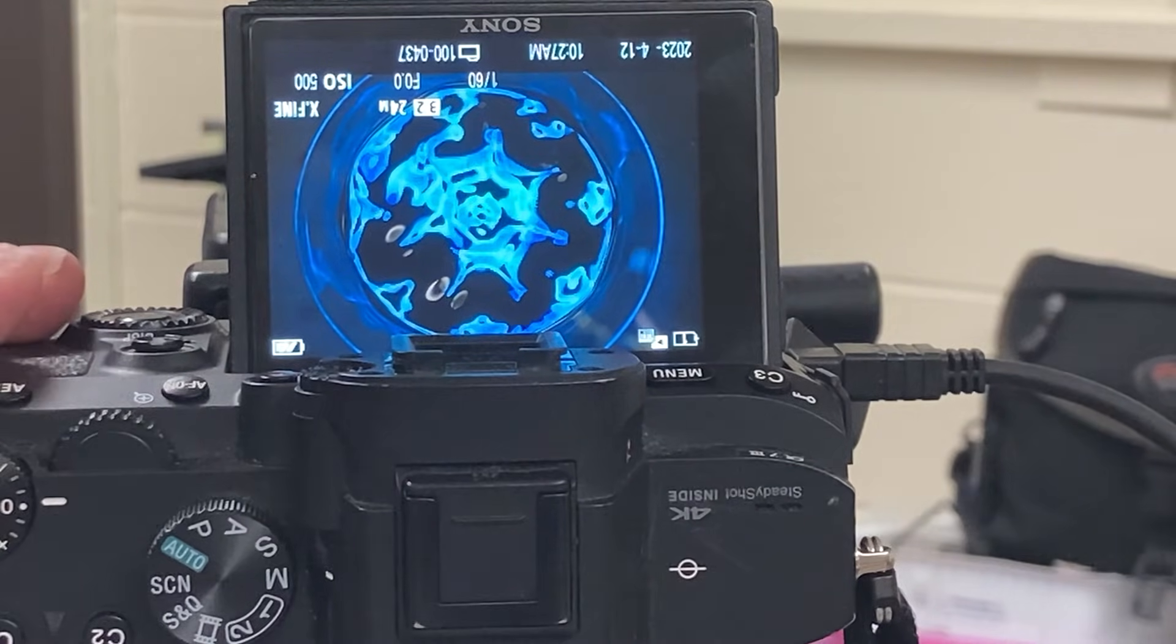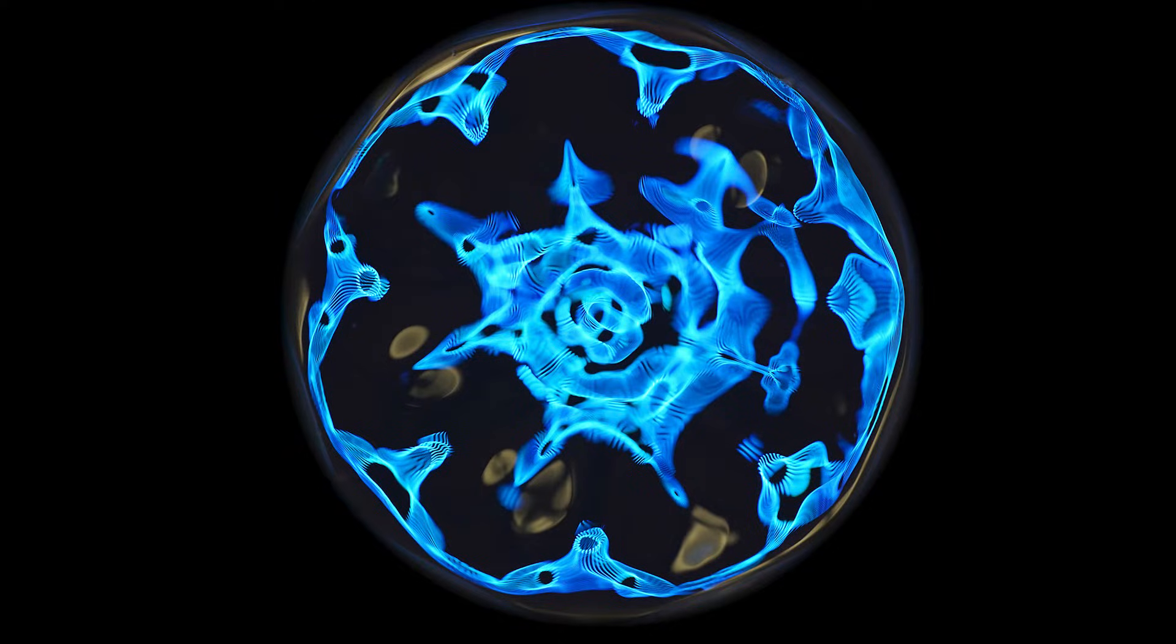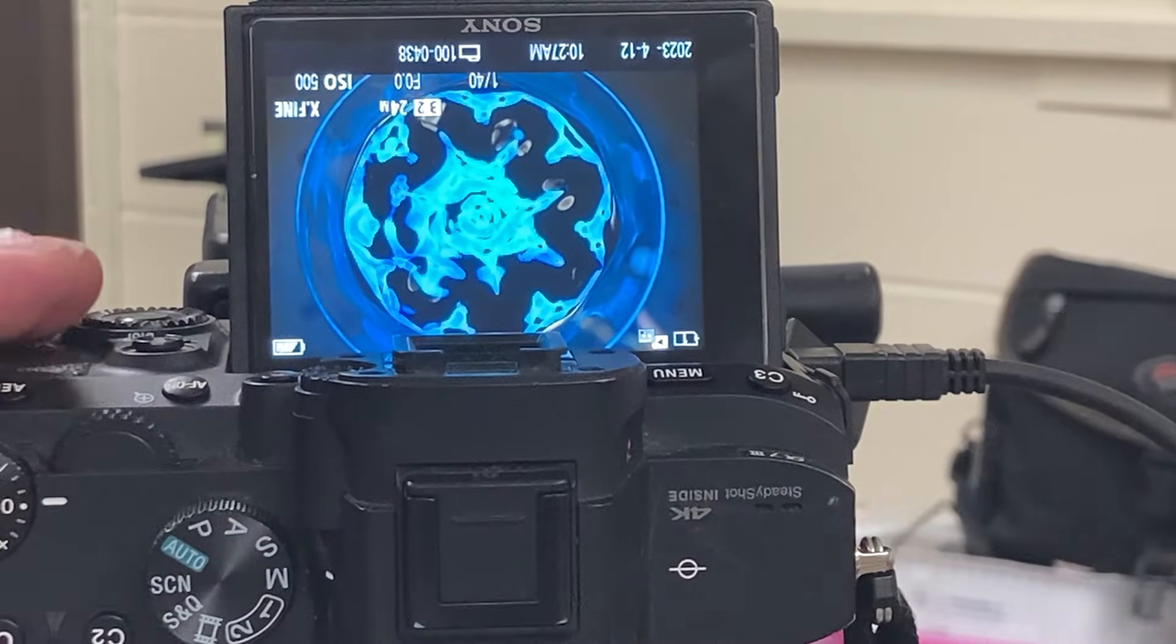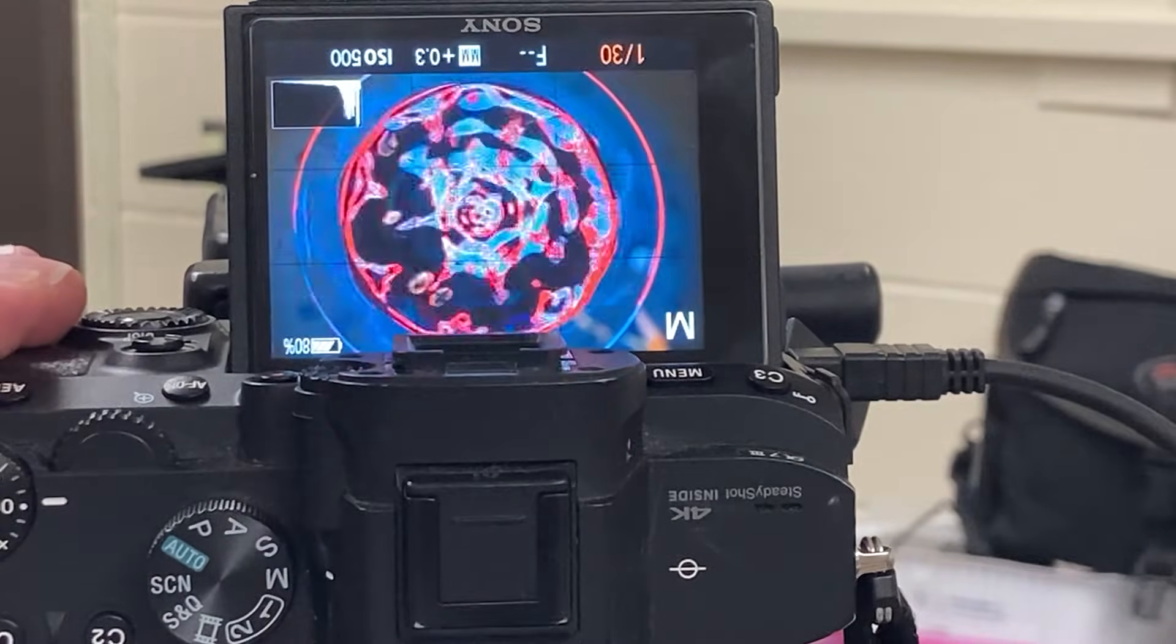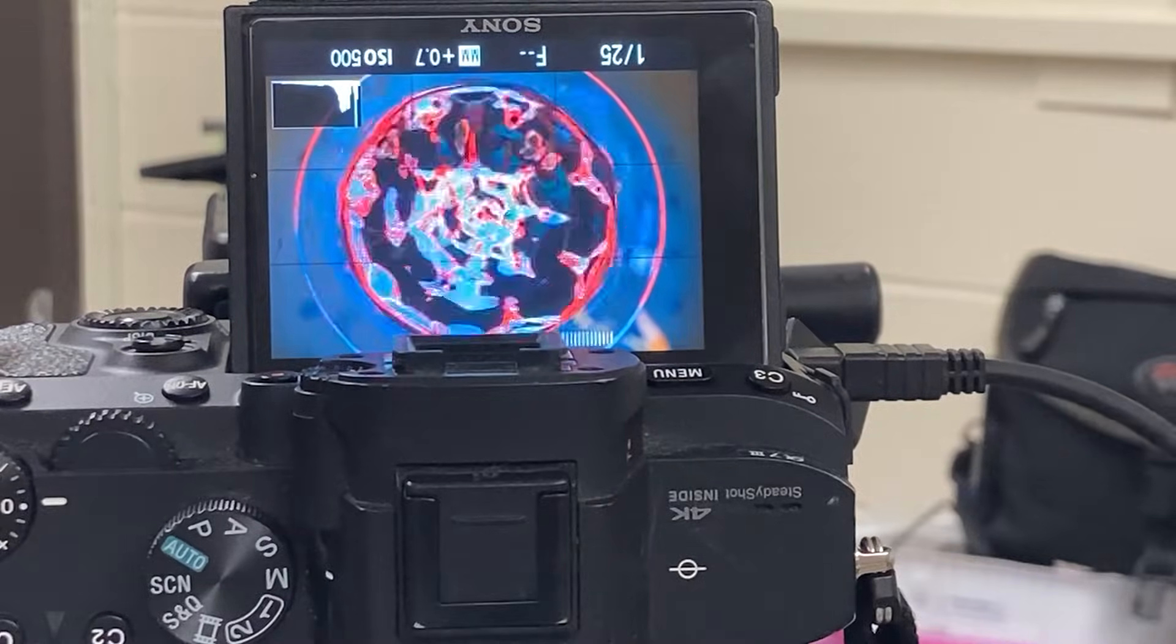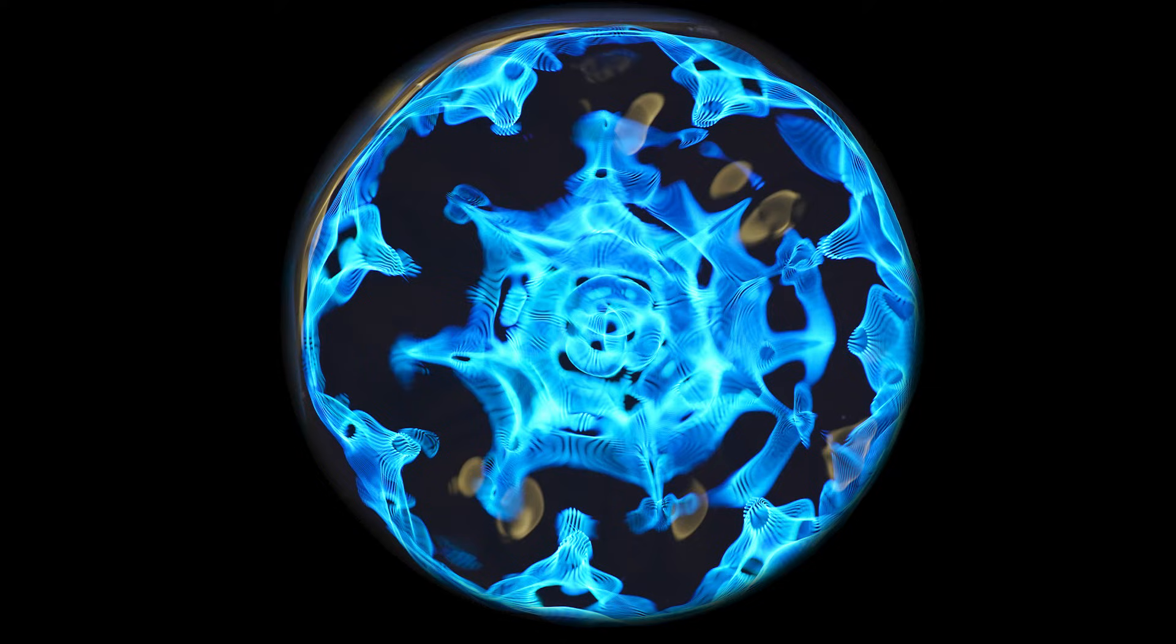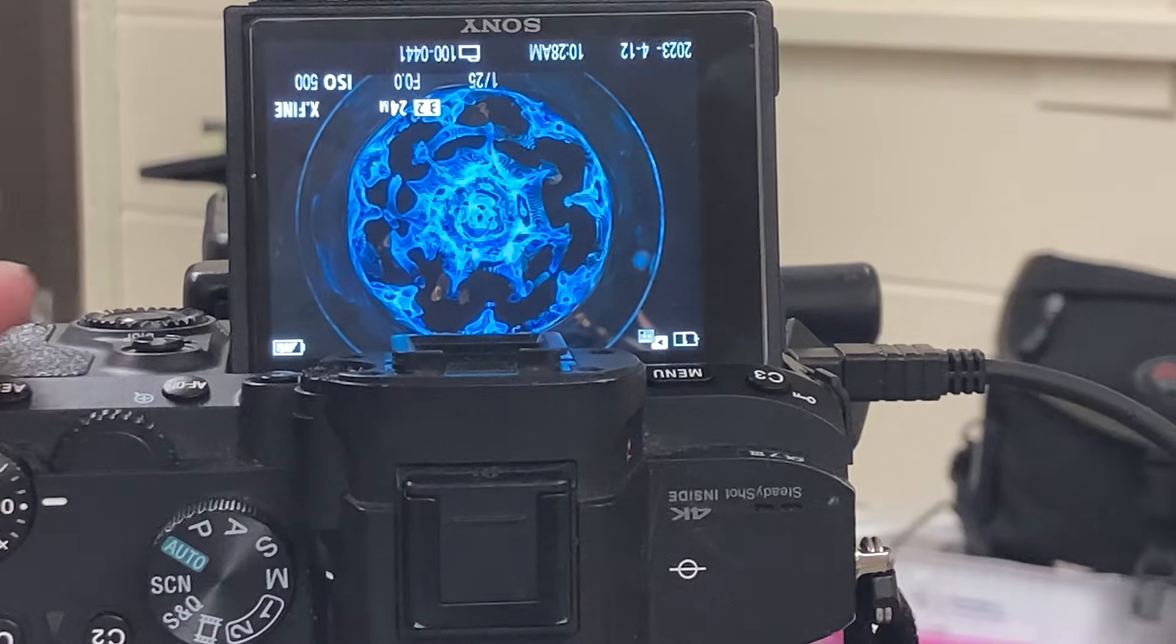Now by changing my shutter speed to say 1/40th, I'm going to allow it to get more light to be reflected around the surface and it'll average that pattern together. Here's another 1/25th. I do get a lot more light in, so I'm going to bring it down a couple stops. Once again, that looks pretty good.